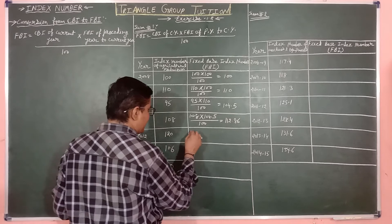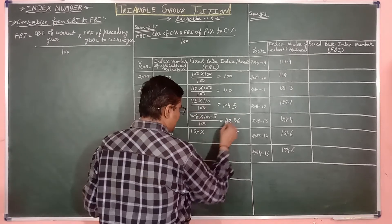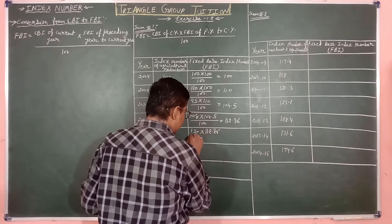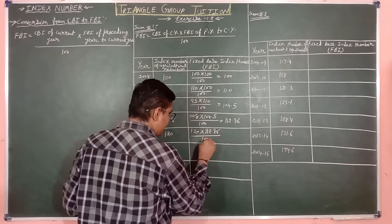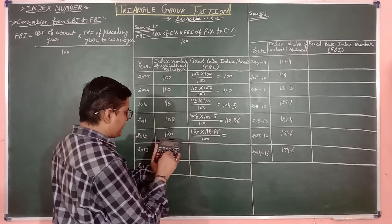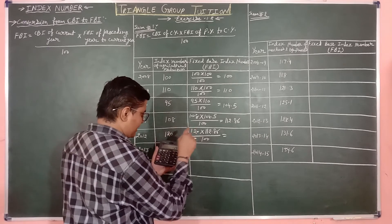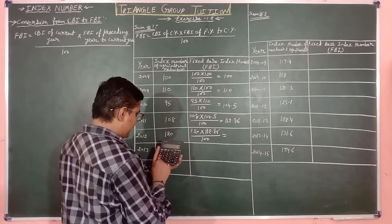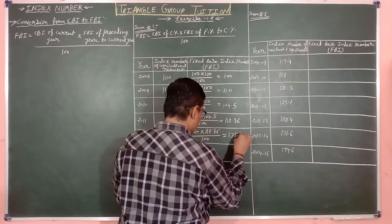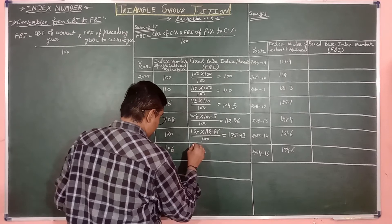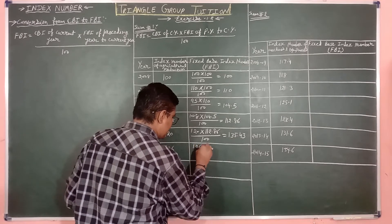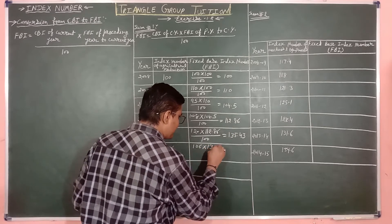Current year CBI is 120. Preceding year FBI is 112.86, divided by 100. Amount will be 135.43.